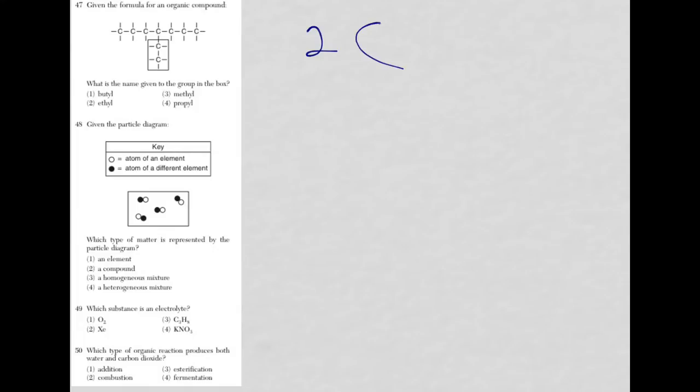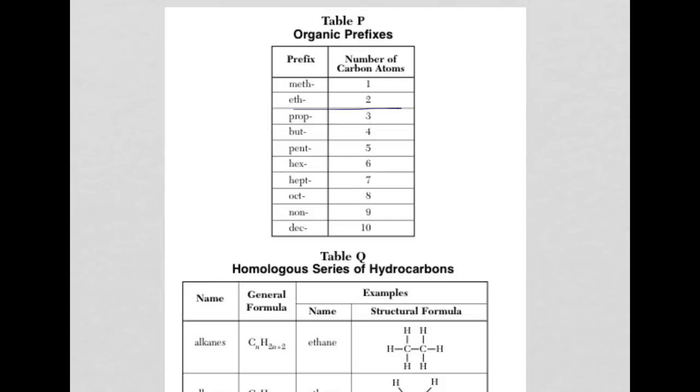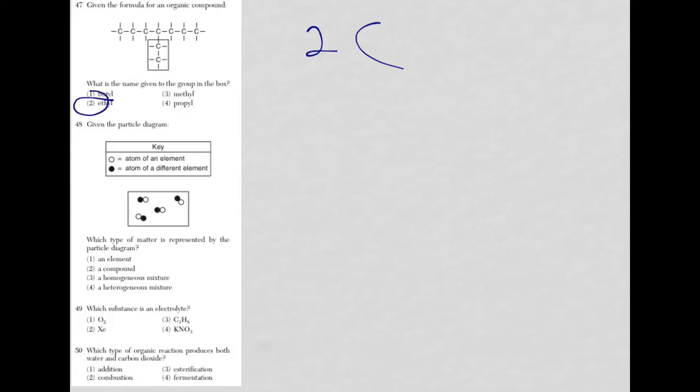If you don't have it memorized, here it is. Two carbons is eth, so it's an ethyl group. So I'm going to call it a definition, or I guess you could call it a skill, just knowing how to use the reference tables.